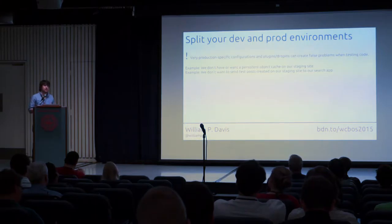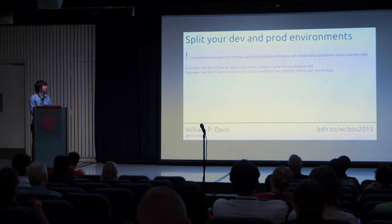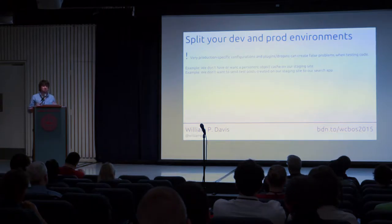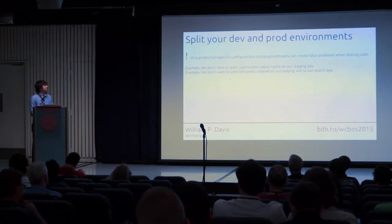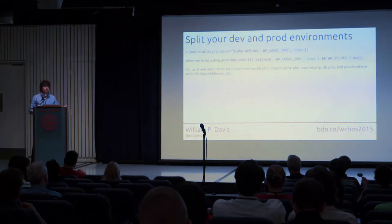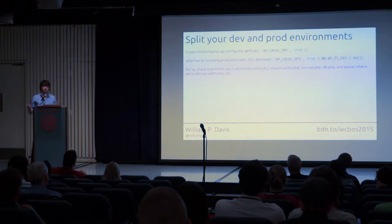An example for us is object caching. We have persistent object cache on our live site using Memcached, which is awesome. But we don't want that on our local site where we don't really want the options to persist — we want to be able to change them without flushing the cache every time. We also have page caching and database load balancing on the production site, and we're not going to test with multiple databases unless we're actually testing specific changes in that environment.